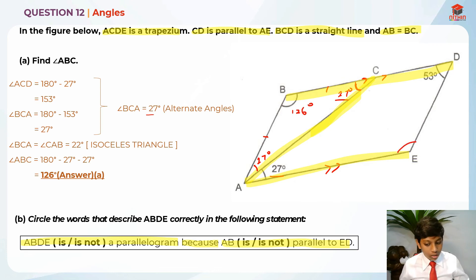In order to find this angle over here, we just need to take 180 degrees minus 53 degrees but it will not give us 126 degrees. So, this is wrong. It's not a parallelogram. It's not parallel to ED. So, ABDE is not a parallelogram. This is the answer for part B.